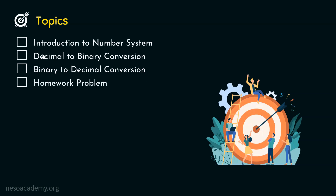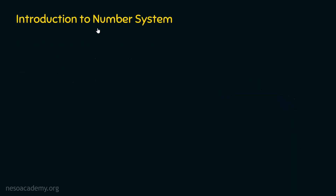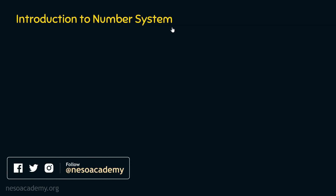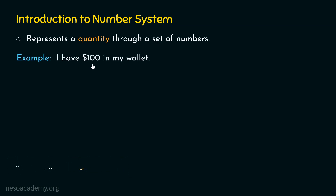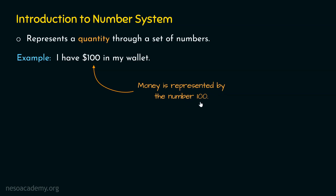Let's get started and see what a number system is. A number system is a system that represents a quantity through a set of numbers. For example, I have $100 in my wallet. Currently in my wallet, I have $100. I am representing the money in my wallet by the number 100.